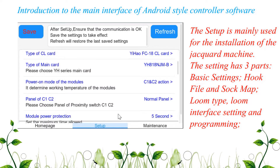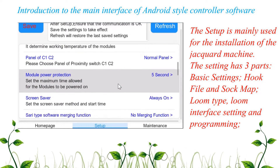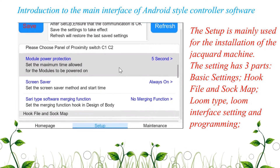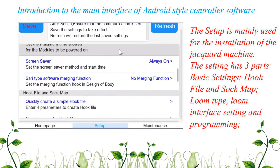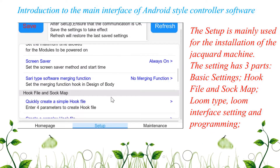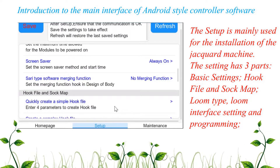The setup section is mainly used for the installation of the Jacquard machine. The setting has three parts: basic settings, hook file and SOC map, loom type, loom interface setting, and programming.